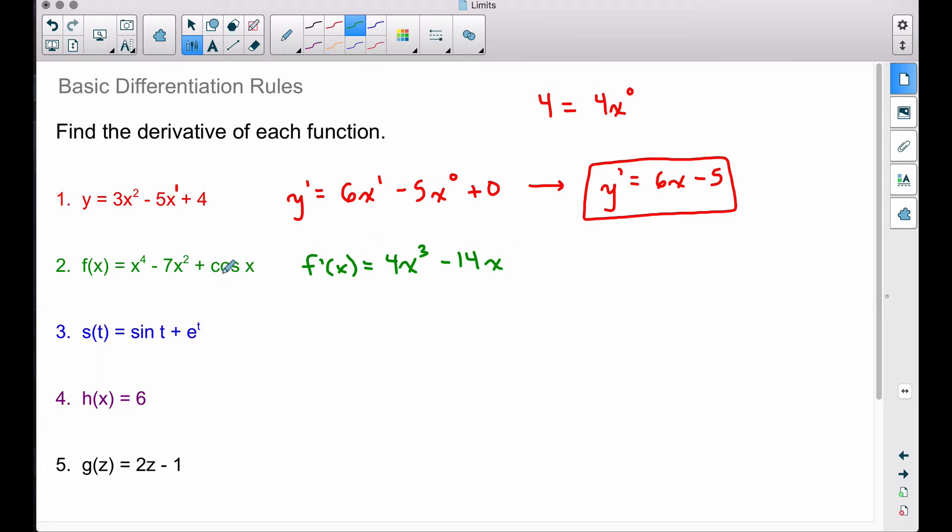And now we have a trigonometric expression right here, this trig term. The derivative of cosine of x is negative sine of x. Pull out your calculus textbook, look at your trigonometric derivatives, and you will see that the derivative of cosine is negative sine.